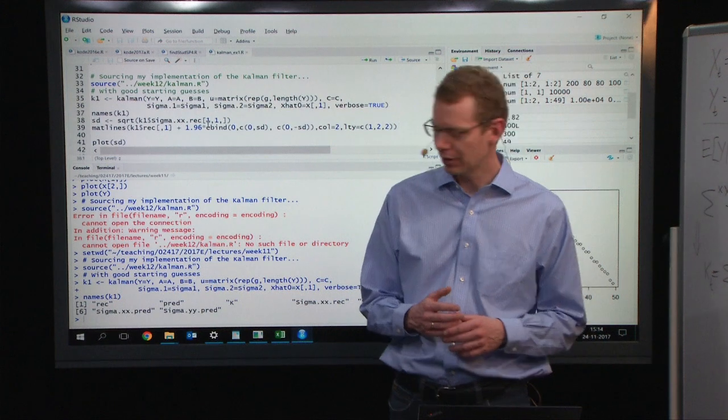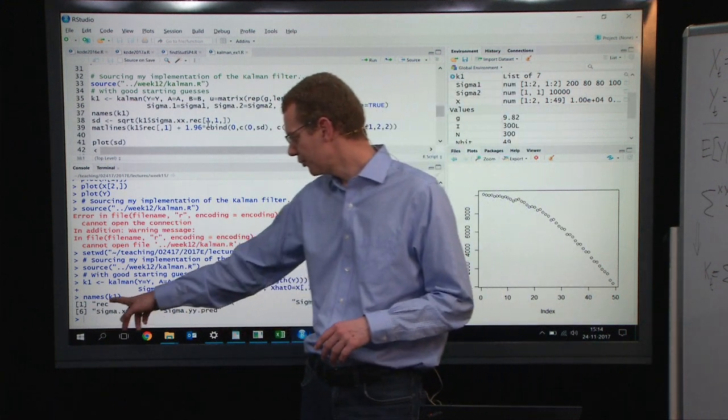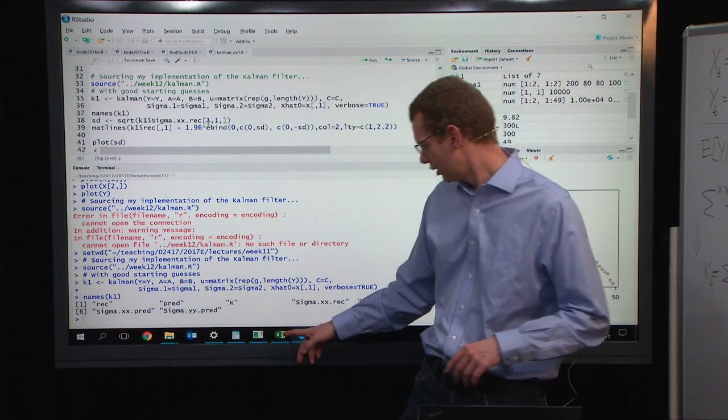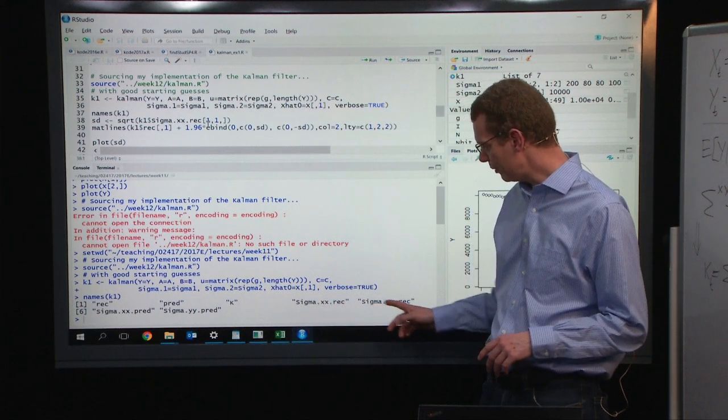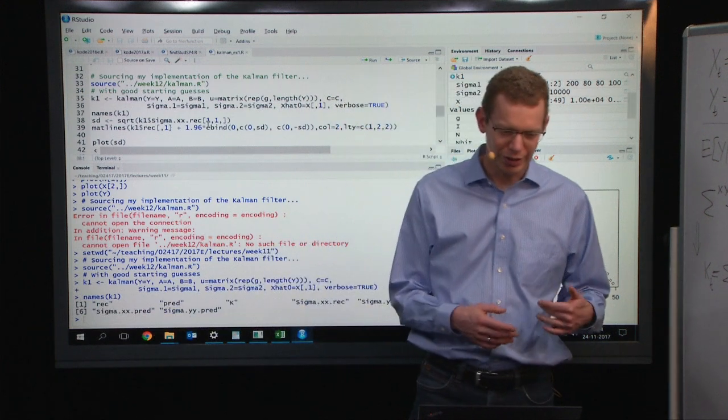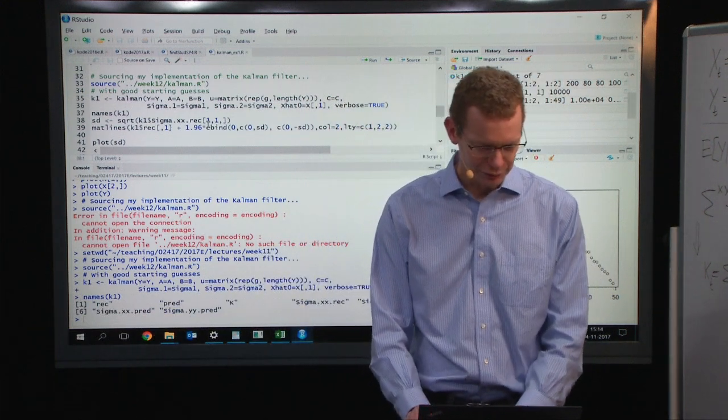In my function, what I return is the reconstructed and the predictions, the Kalman gain, the sigma xx, sigma yy, both for reconstruction and predictions, so that I can plot everything afterwards.